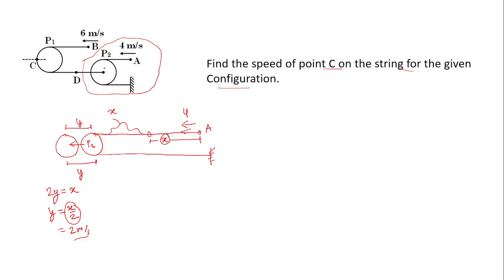By similar logic, if A is moving with velocity 4 meters per second, then P2 will be moving with velocity 2 meters per second. So we have got the speed of P2, which is 2 meters per second.